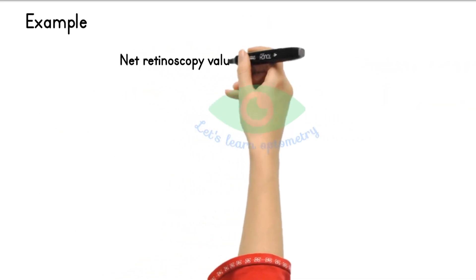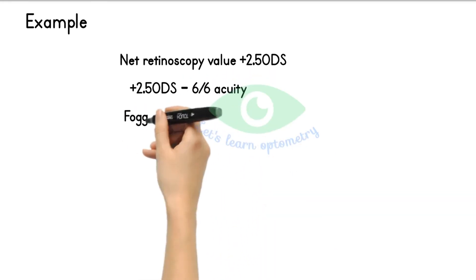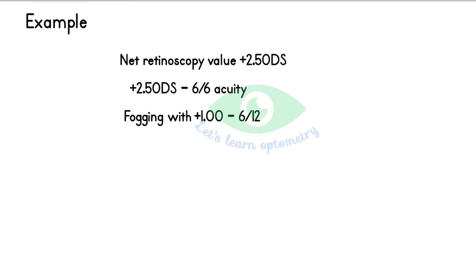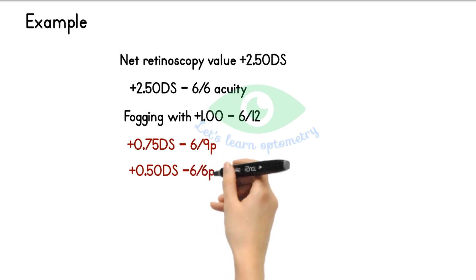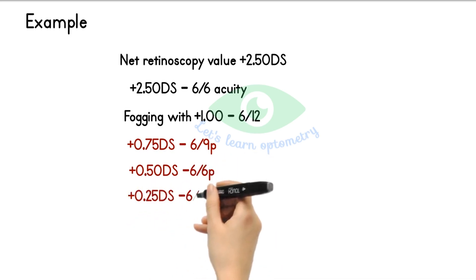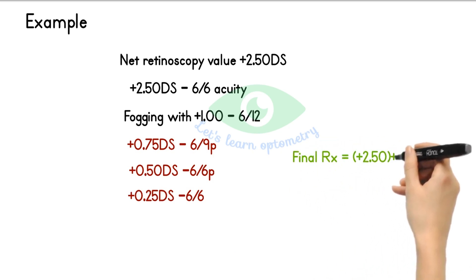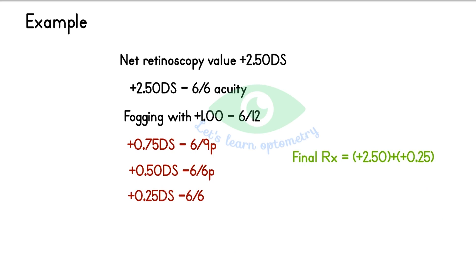Example: net retinoscopy finding is plus 2.5 diopters. With plus 2.5 diopters, the patient read 6/6. You then fog them with plus 1, and the patient now reads 6/12, achieving 2 lines worse acuity, so you begin defogging. With plus 1, they read 6/12; with plus 0.75, they read 6/9 partial; with plus 0.5, they read 6/6 partial; and with plus 0.25, they read 6/6 clearly. So the final Rx will be plus 2.5 from the objective value plus 0.25 from fogging, totaling plus 2.75 diopters. If fogging had not been done, you would have left the patient with a 0.25 diopter under-correction.